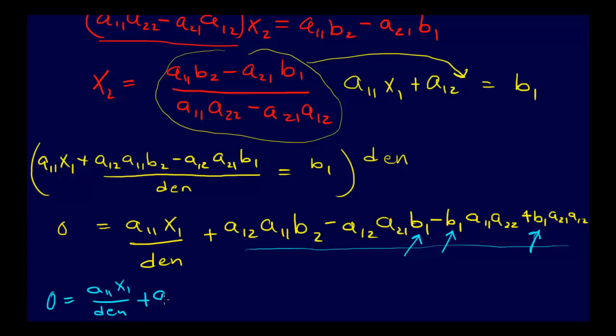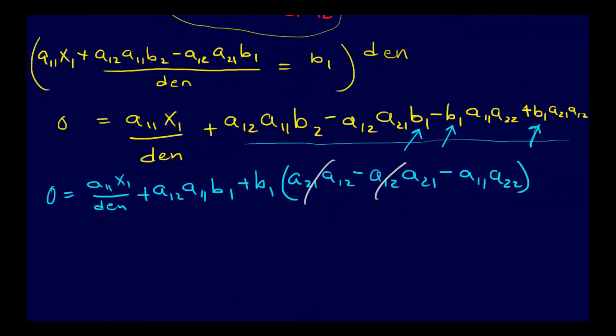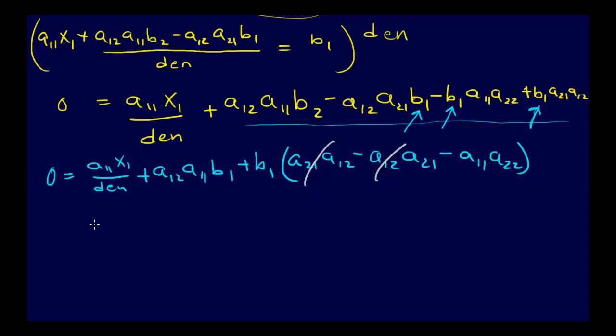So I'll just go 0 equals a11x1 over that denominator, plus a12a11b1, now I'm going to minus, and then I'm going to have a b1 here, so I'll factor out that b1, so I'll put this term first, so we go a21a12 minus a12a21 minus a11a22. And so if you look there, we have like terms, that's a plus term and a minus term, so those cancel out. So those terms cancel out, so then we're left with.